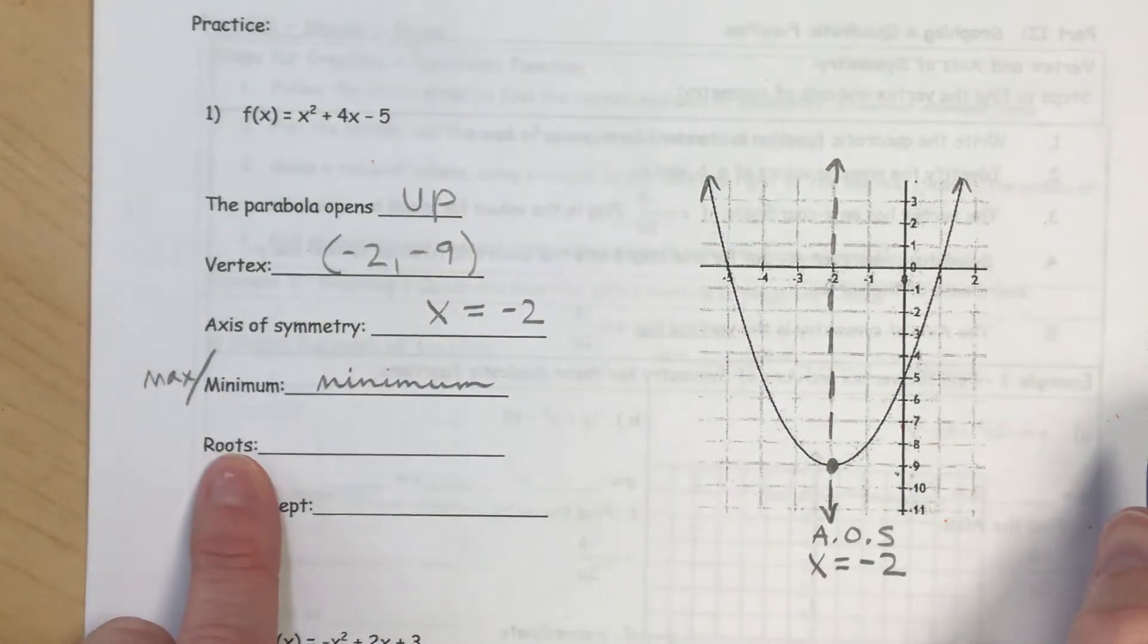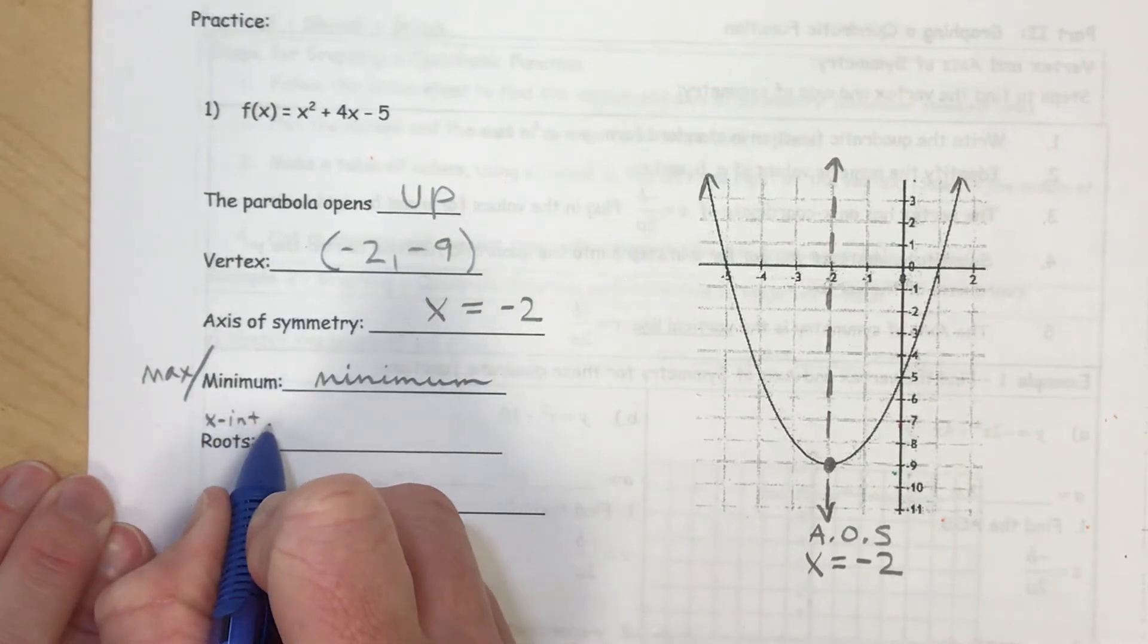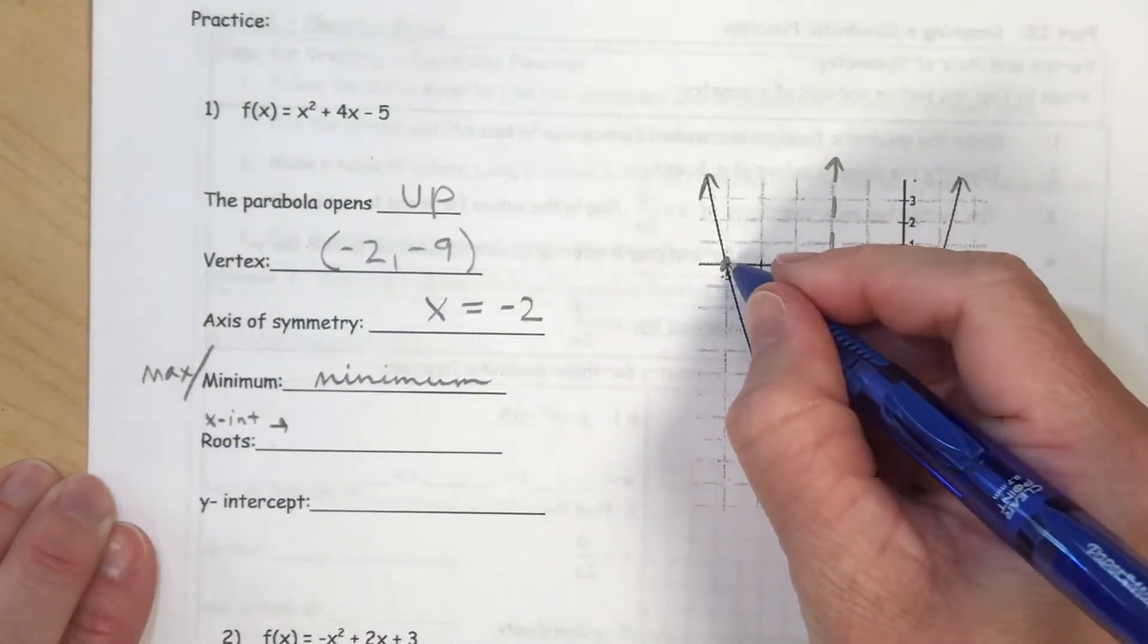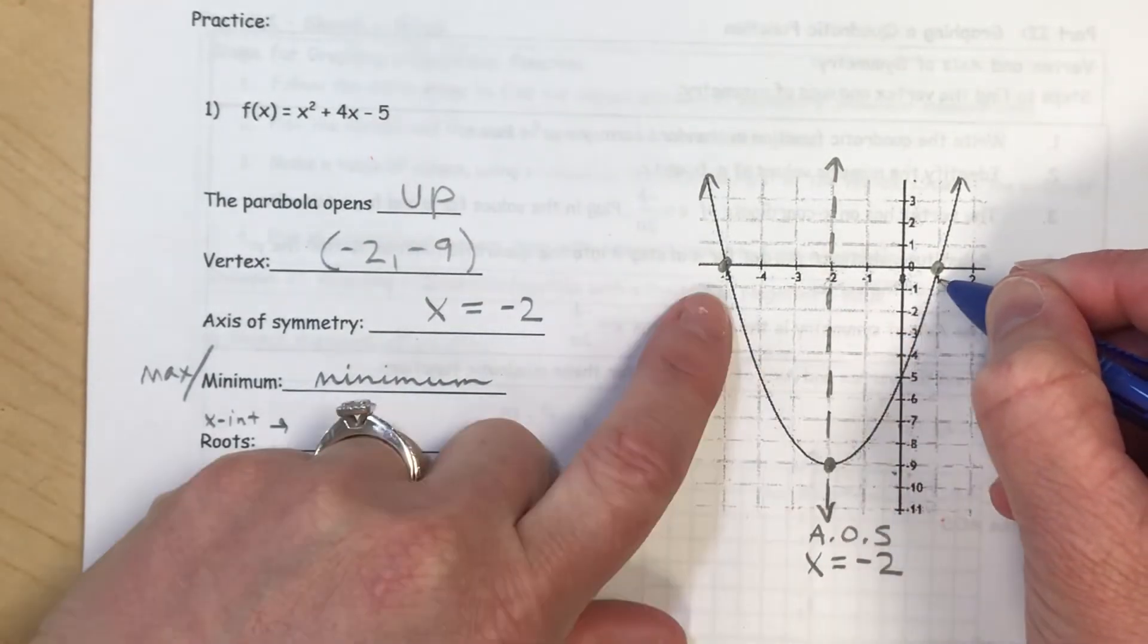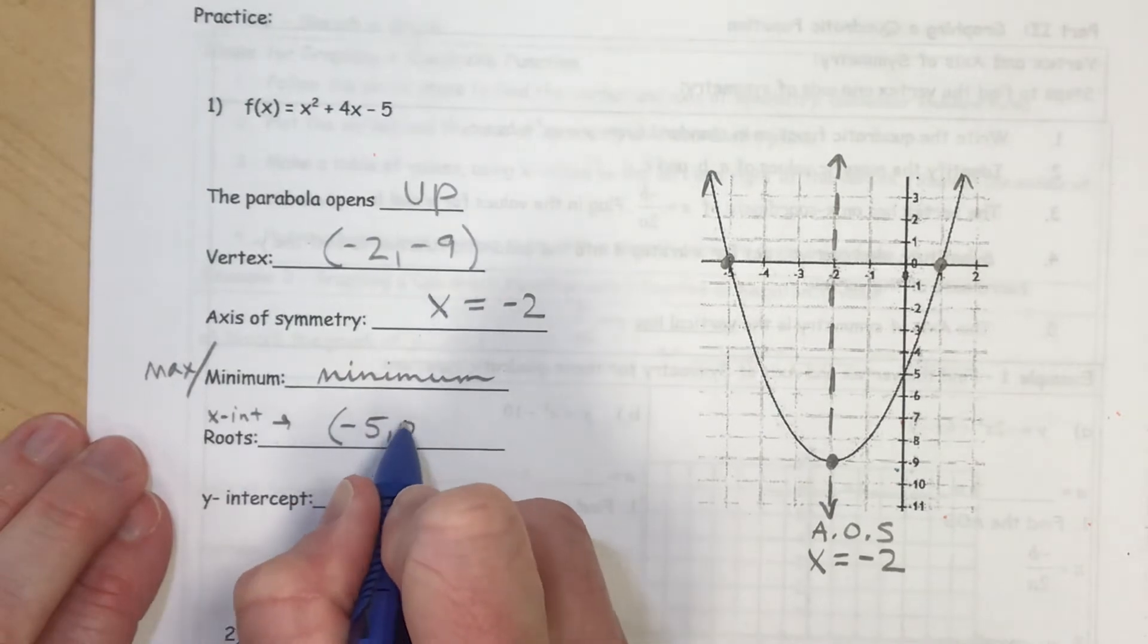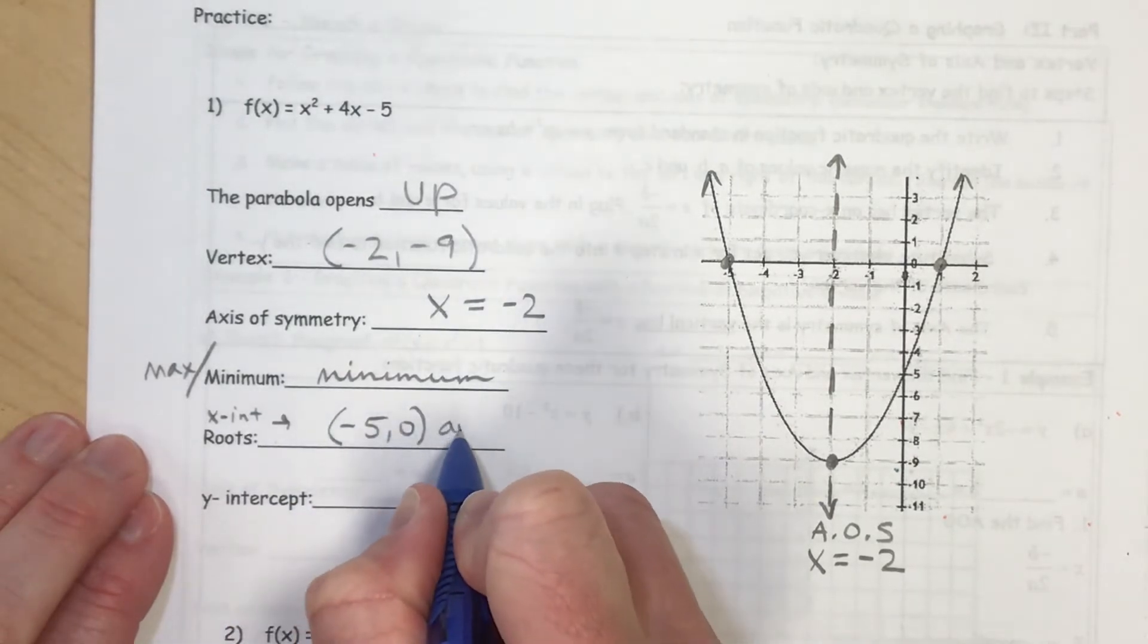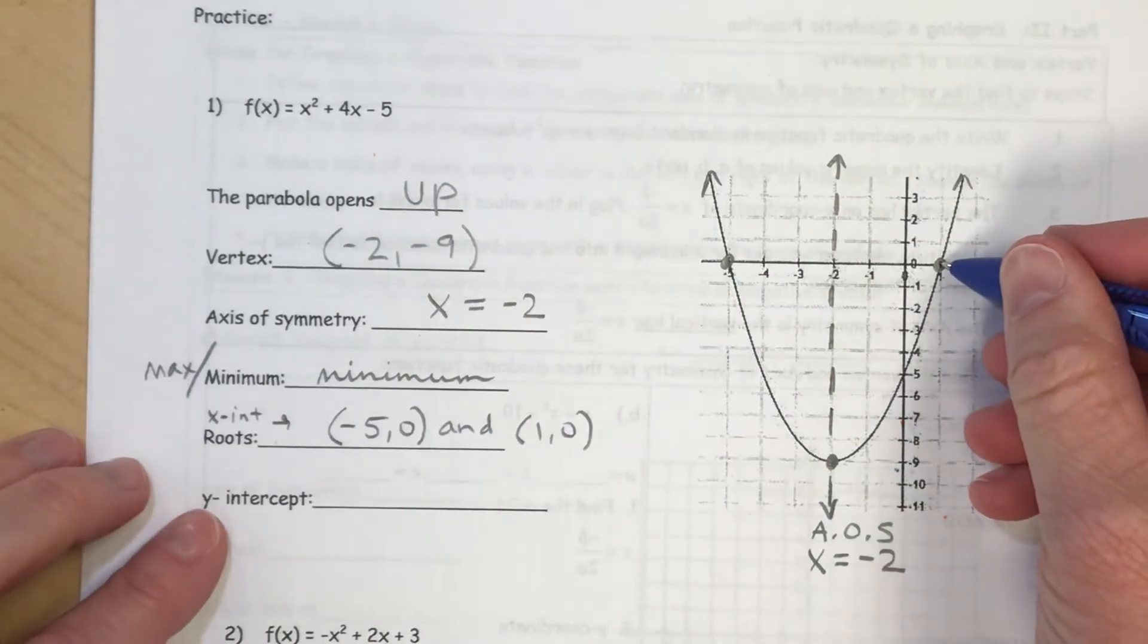And then roots. Roots also mean the same thing as x-intercepts. And I notice we have two of those. So on my x-axis, I notice there's one at 1 and another one at negative 5. So negative 5, 0 is an x-intercept, and 1, 0 is an x-intercept.